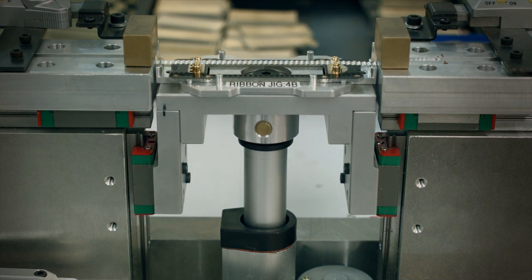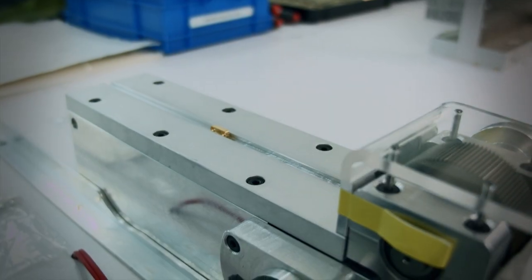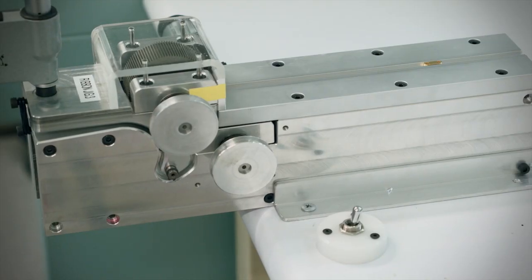These laser cut elements then pass through a proprietary machine which applies an acoustically optimized corrugated pattern to the foil.